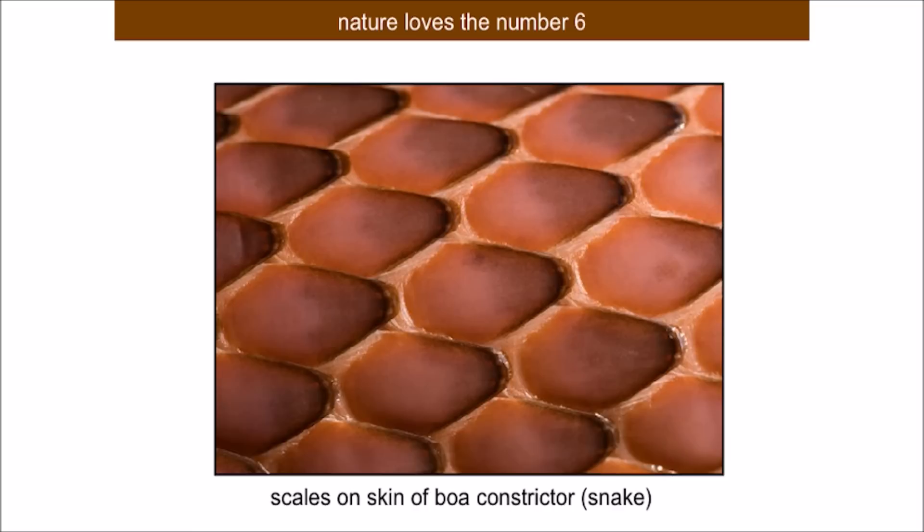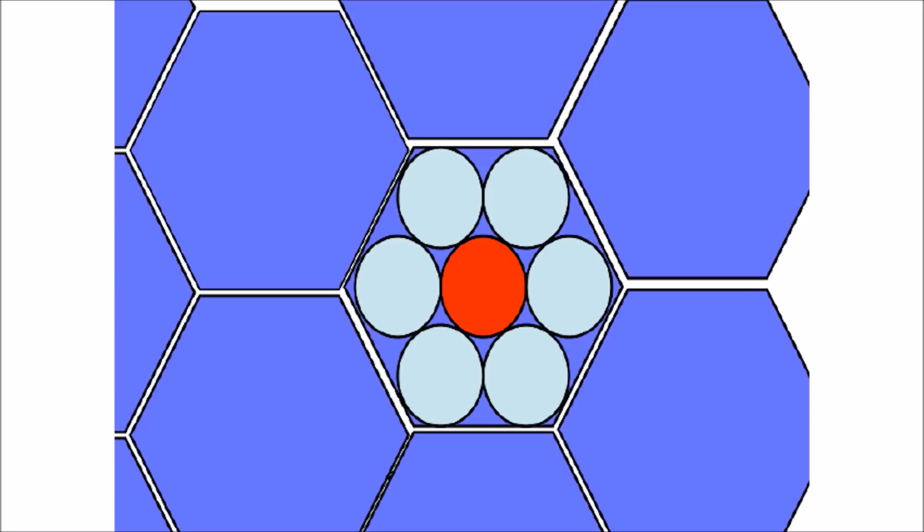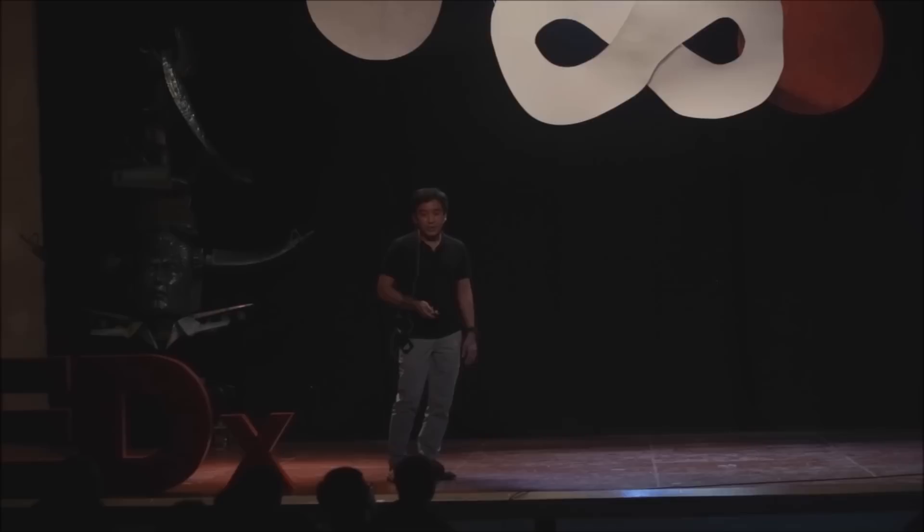Now, why the number six? Here's a little thought experiment. I have a red coin. I want to ask how many coins of the same size go around this red coin. One, two, three, four, five, six. Not four, not five, not seven. This is exactly six. Six is the perfect fit. And I can contain this in a hexagon. Now, a hexagon, just like square tiles, if I have hexagonal tiles, I can fill the floor with hexagonal tiles. We can only do this with three regular shapes: a triangle, a square, and a hexagon. A hexagon is the maximum number, six.